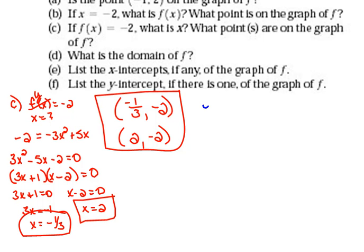All right, part E. Part E says, list the x-intercept, if any, of the graph. All right, so for x-intercepts, we need to determine what do we know. And we know that for every single x-intercept, the y value is 0.